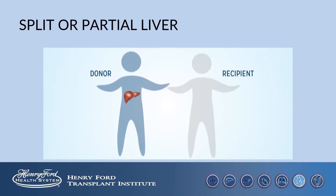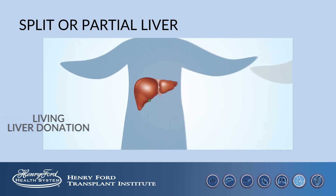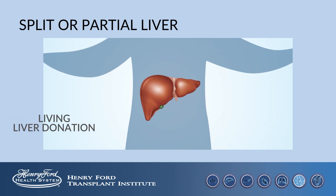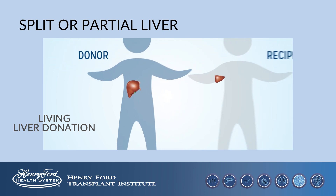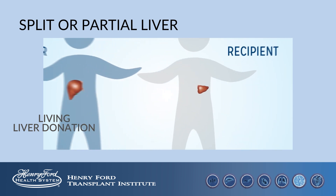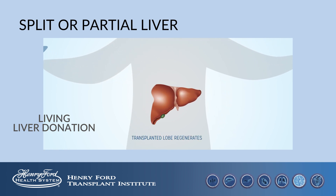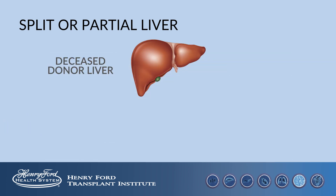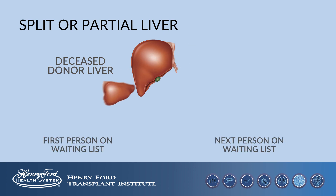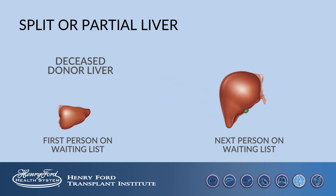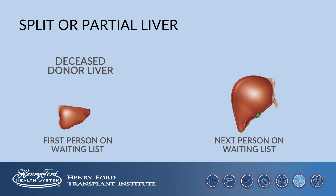Split or partial liver transplant occurs in two situations. In living liver donation, about half of a donor liver is removed from the living donor and placed into you. This healthy piece of liver is large enough to meet your needs and will continue to regenerate over time. A second situation in which a piece of liver is used is in deceased donation. In deceased donation, if the first person on the waiting list does not need the entire liver — for example, if it is a small child — the remainder of the liver is offered to the next person on the waiting list. Regardless of whether you receive a whole organ or a piece of an organ, your entire liver and gallbladder will be removed.